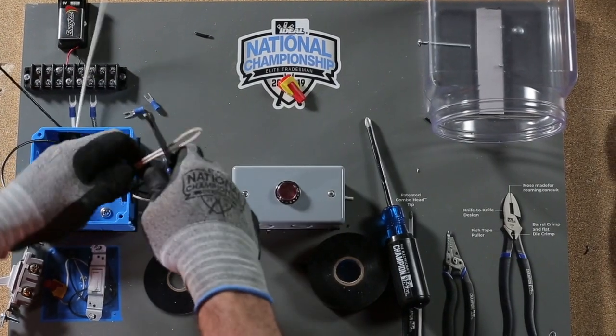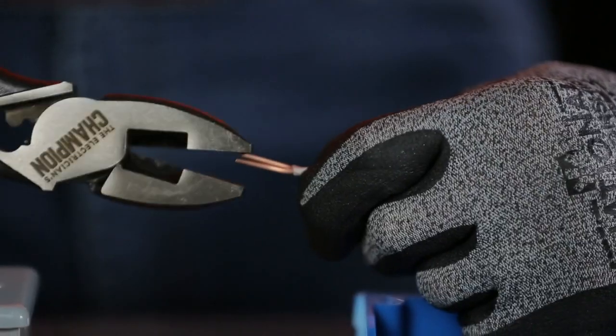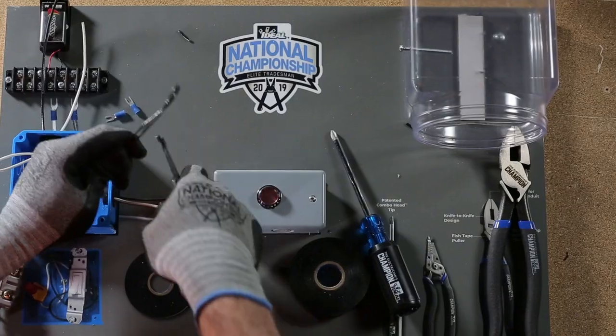In the electrical box, cut both wires and strip all ends with the T-Strippers. Using the Linesman pliers, pre-twist the white conductors and terminate with the Ideal Twister Pro wire connector.